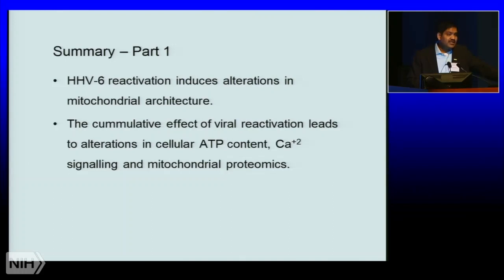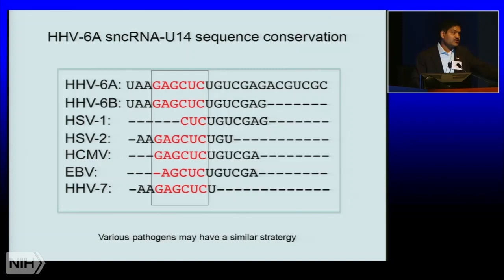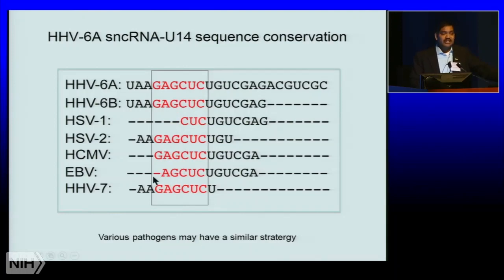With this idea, we came to the Solve ME-CFS Initiative and wanted to check if this is the case in ME-CFS patients. I don't believe HHV6 is the only virus causing the disease. The small RNA I'm talking about — 23 nucleotides — has a region of 7 nucleotides which is doing the job. These regions are almost highly conserved in different herpes viruses. And I'm sure if people look into different other pathogens, they will also find similar strategies. This might be a universal approach by many different pathogens to alter the mitochondria.